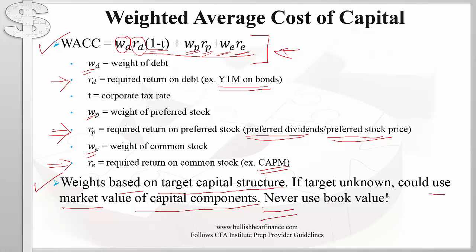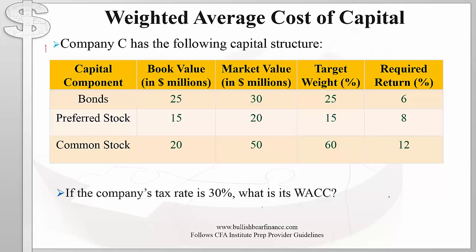We never use book value of the capital components — that is just historical cost; ignore that for computing WACC. Let's look at an example and compute WACC. Here we have Company C with the following capital structure: bonds, preferred shares, and common shares. We are provided the book value, market value, and target weight for these capital components, as well as the required returns on each. If the company's tax rate is 30 percent, what is its weighted average cost of capital?